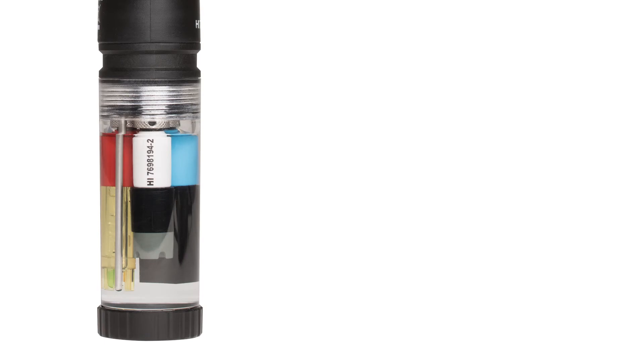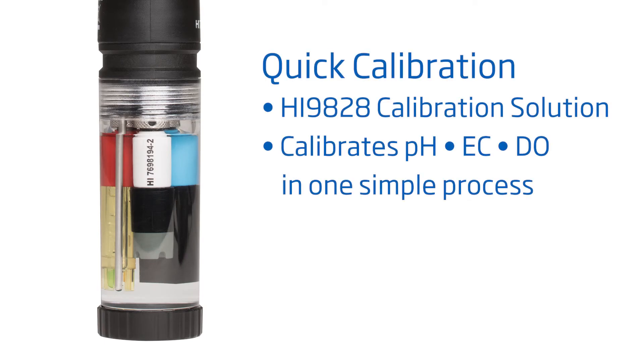Calibration is an important step to ensure the most accurate measurements. We recommend calibrating before each use. Although you can calibrate each sensor individually, in this video, we'll do a quick calibration. Quick calibration is a great way to calibrate for pH, EC, and DO all with one process.